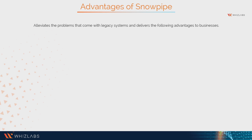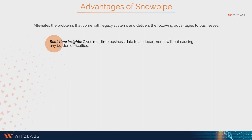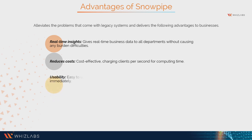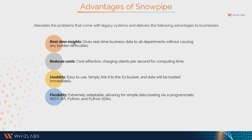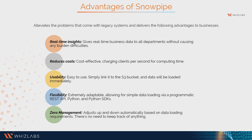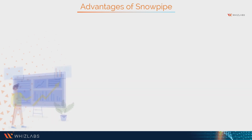Snowpipe alleviates the problems that come with legacy systems and delivers the following advantages: real-time insights — Snowpipe gives real-time business data to all departments without causing any burden; reduces cost — it is incredibly cost effective, charging clients per second for computing time; usability — it is really easy to use, simply link it to the S3 bucket and data will be loaded immediately; flexibility — Snowpipe is extremely adaptable, allowing for simple data loading via a programmatic REST API, Python, and Python SDKs; zero management — Snowpipe adjusts up and down automatically based on data loading requirements.